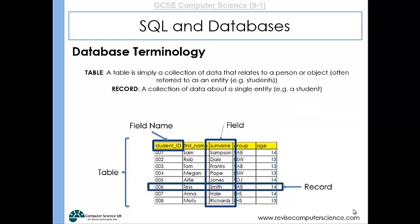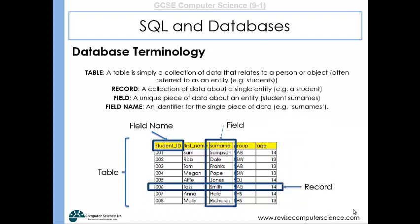A record is a collection of data about a single entity — so it could be a single student, for example. A field is a unique piece of data about an entity; if you were describing a student, you might describe them as having a surname, and that would be a field. A field name would be the identifier for that single piece of data in your table — so it would be the column header.